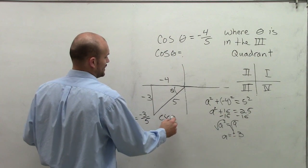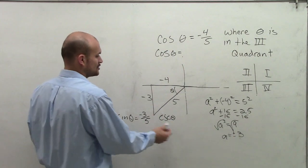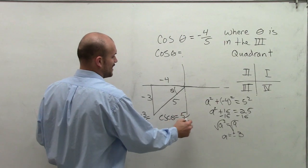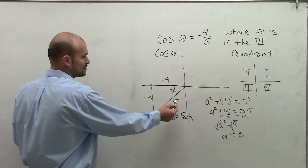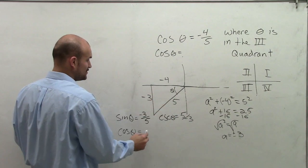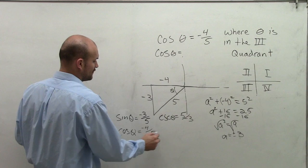The cosecant of theta, which is the reciprocal of the sine function, is just going to be the reciprocal, so therefore it would be 5 over negative 3. Then we take a look at the cosine of theta, which is the adjacent side over the hypotenuse, so that would be negative 4 over 5.